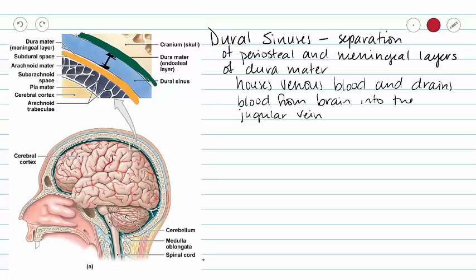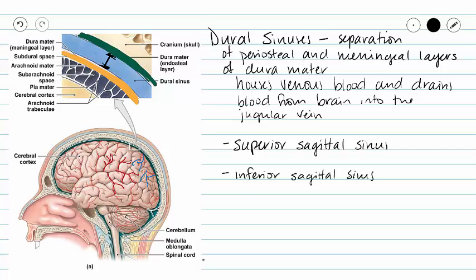This blood drains from the brain. On the surface of our brain we have both arteries and veins. Those veins drain into our dural sinuses and then eventually into our jugular vein, which drains blood from our entire head. The three dural sinuses we will learn by name are the superior sagittal sinus, the inferior sagittal sinus, and the transverse sinus.